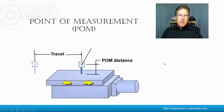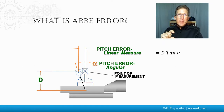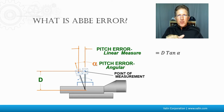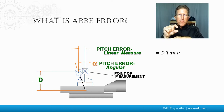What's the Abbe Error? The Abbe Error is the angle that can be caused by the motion of that carriage as it moves down the rails. It could be roll error, it could be pitch error, it could even be yaw error. But each one of those will cause an angular error at that point of measurement that's an inch above the carriage.